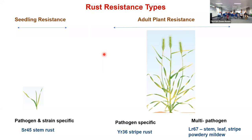The other type is adult plant resistance, expressed only at later stages of crop growth when the wheat plants are about to flower. There are two subtypes: pathogen-specific — for example, YR36, which provides resistance only against strains of stripe rust — and multi-pathogen resistance, such as LR67, which functions against stem rust, leaf rust, stripe rust, and powdery mildew. These adult plant resistance genes are very important because of their multi-pathogen resistance.